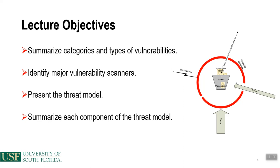In this lecture, we're going to take another look at the information security model. We talked about assets in the previous lecture, specifically information assets and the different types available within IT systems. Now we're going to examine two other components: vulnerabilities and threats. We'll define each, summarize their categories, look at vulnerability scanners beyond the textbook, and then discuss the threat model.